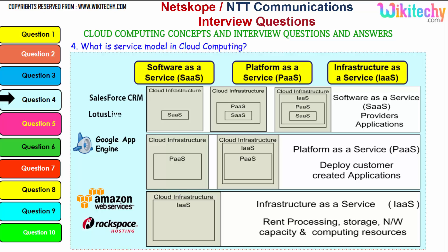For Software as a Service, the cloud infrastructure has software placed in the operating system placed in the infrastructure. For Platform as a Service, the OS is given which is placed in your server — you can put any application or software you want. For Infrastructure as a Service, a server is given to you — whatever OS you want, you can put it, and whatever application you want you can install. Examples for SaaS are Lotus, Live, and Salesforce CRM; for PaaS it's Windows Azure and Google App Engine; for IaaS it's Amazon Web Services and Rackspace hosting.